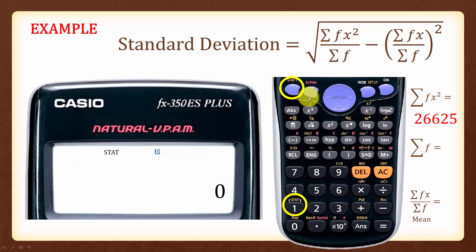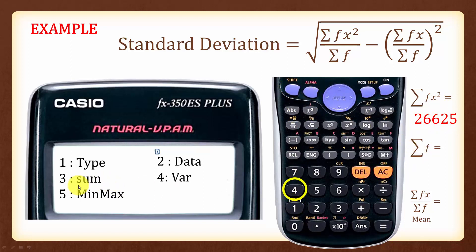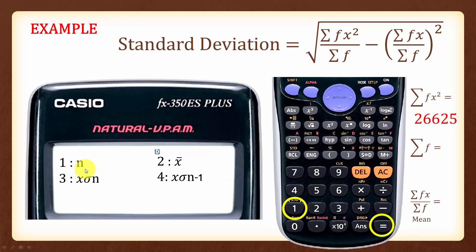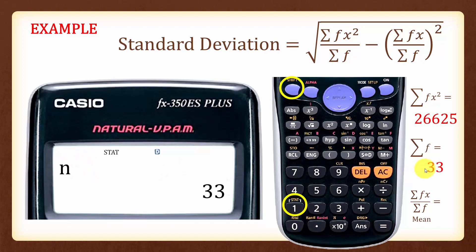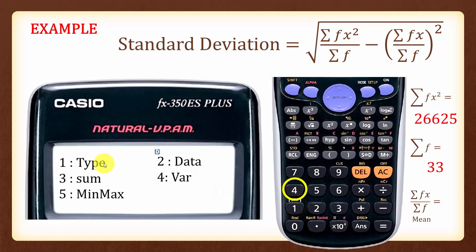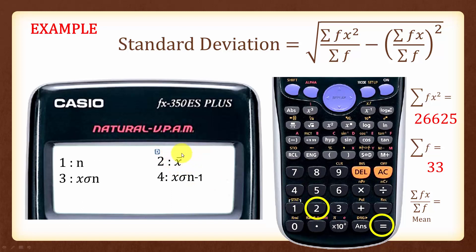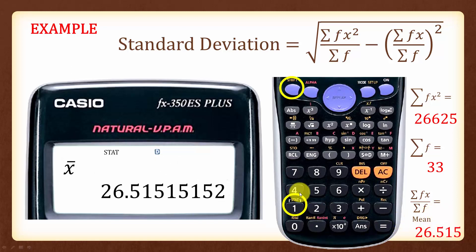To find the summation of f, press Shift 1 to get the menu screen, followed by 4. The letter n represents the summation of f, so select 1 followed by equal. The summation of f is 33. To find the mean, press Shift 1 again, then press 4. The symbol shown is for mean, so press 2 followed by equal. The mean is 26.515 (rounded to 5 significant figures).